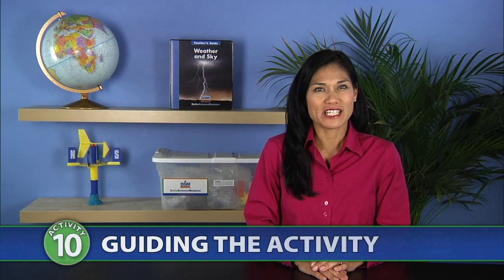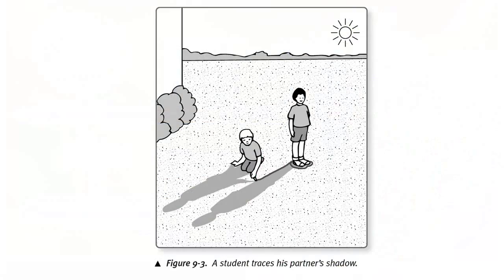To begin the activity, remind students that in the last activity they traced their shadows outdoors. Recall that the light came from the sun and that the sun is a star. Point out that the shadows they traced were made when their bodies blocked light from the sun.